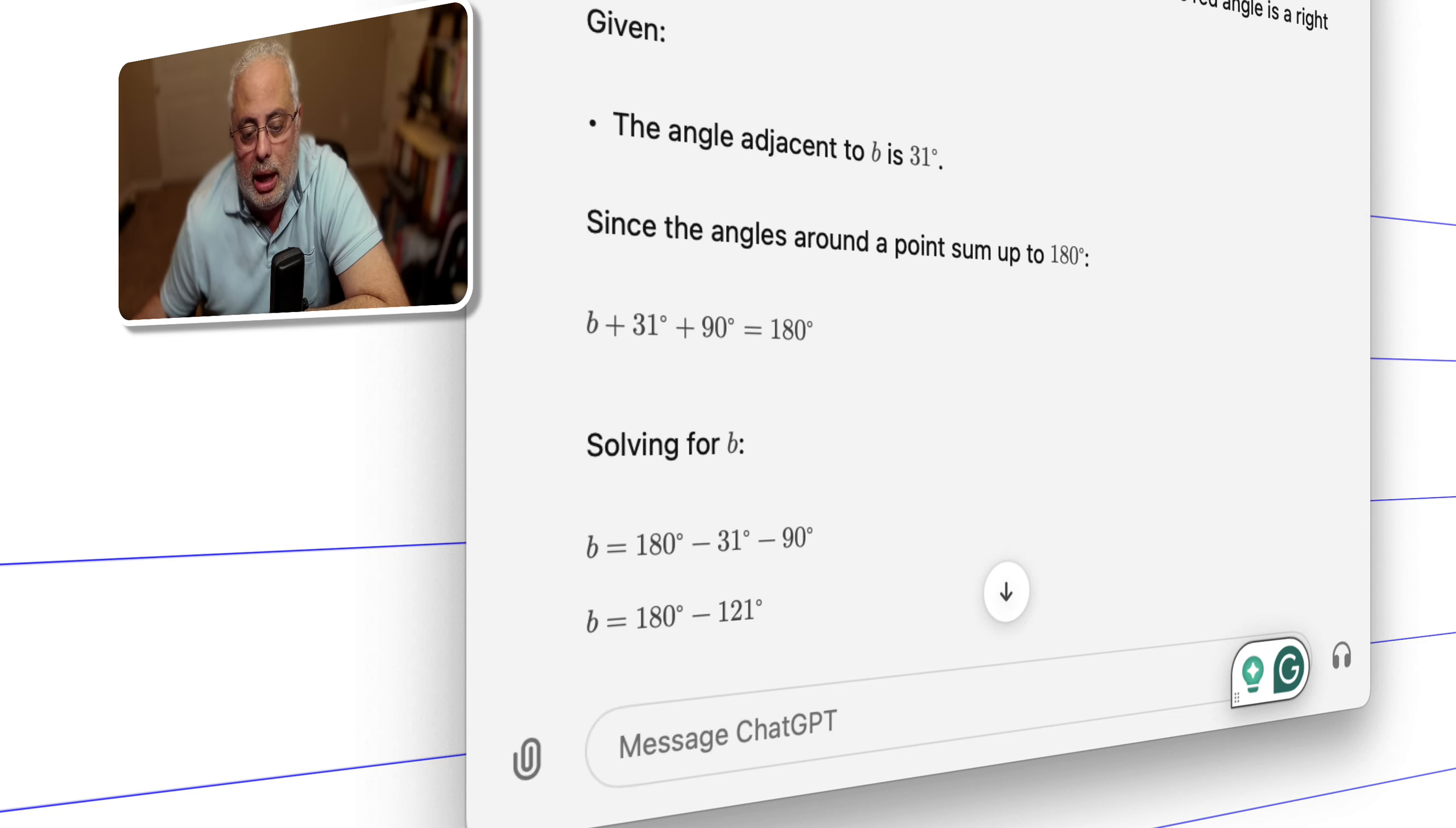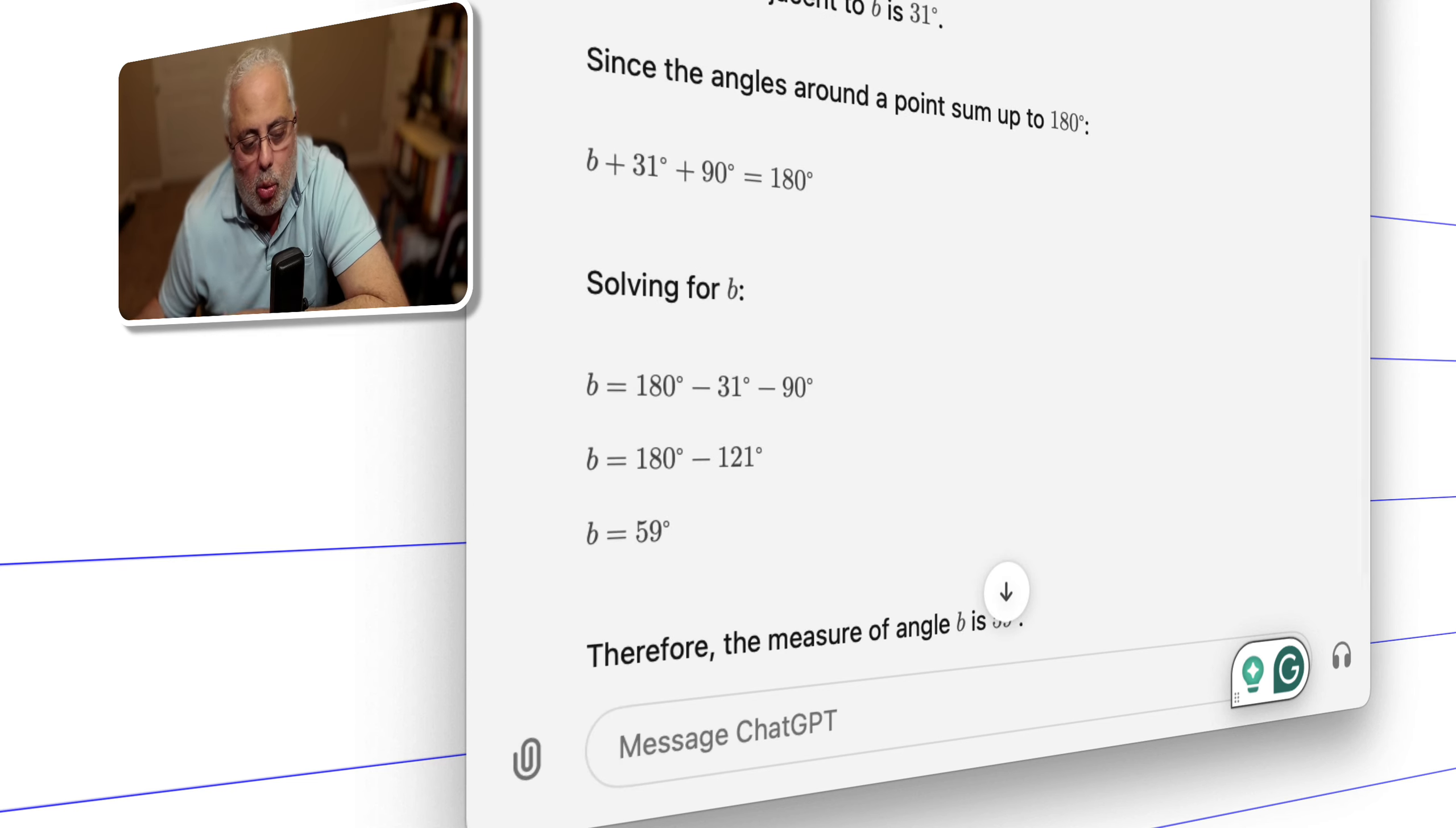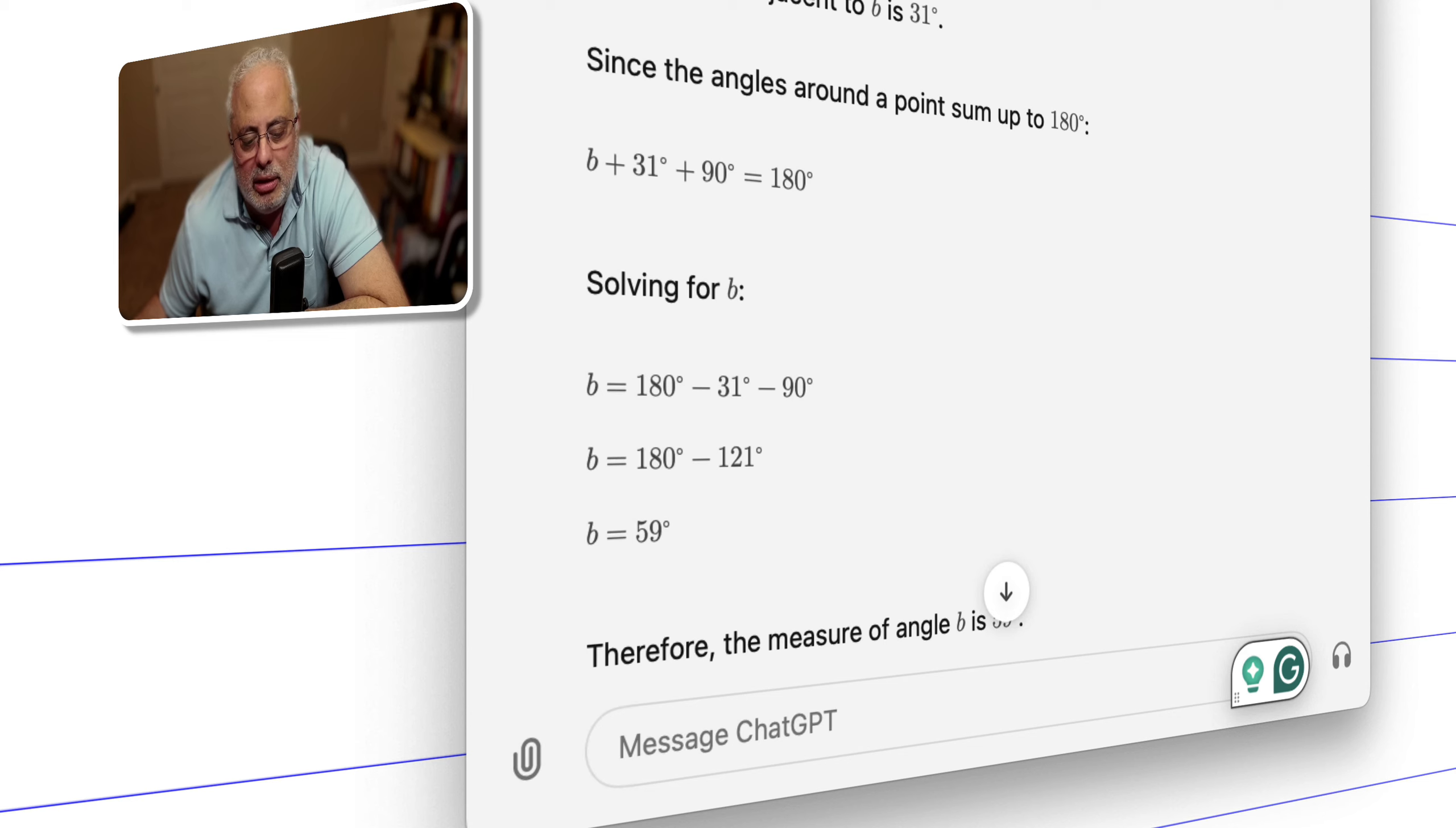And the angle adjacent to b is 31°, since the angles around a point sum up to 180°. So we have b plus 31° plus 90° equals 180°, and then subtract 180 minus 31 minus 90, in order to find the missing angle b, b is 59°.